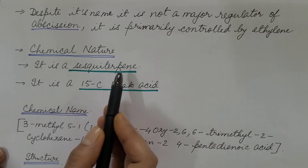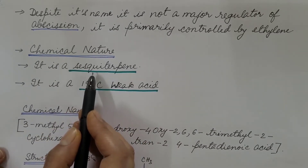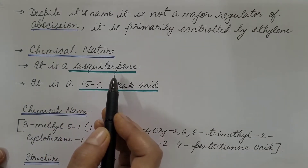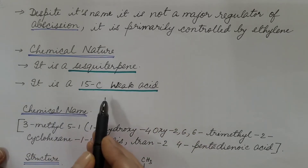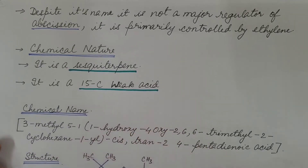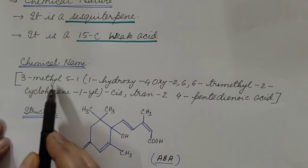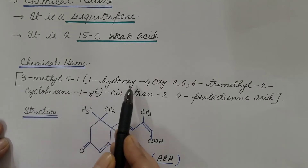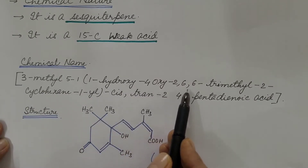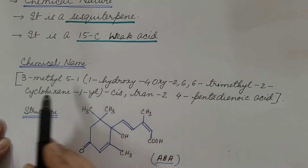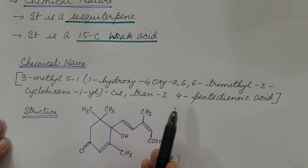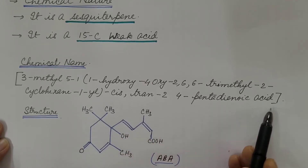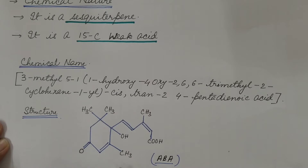Now the chemical nature. Abscisic acid is a sesquiterpene — a terpene with formula C₁₅H₂₄, or a simple derivative of such a compound. It is a 15-carbon weak acid. Its chemical name is 3-methyl-5-(1-hydroxy-4-oxo-2,6,6-trimethyl-2-cyclohexen-1-yl)-cis,trans-2,4-pentadienoic acid. This is its chemical structure.